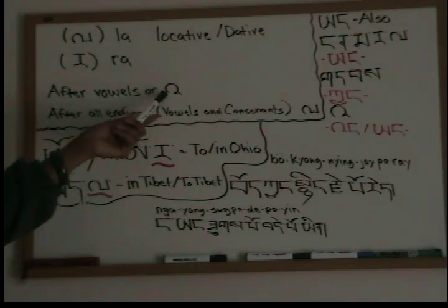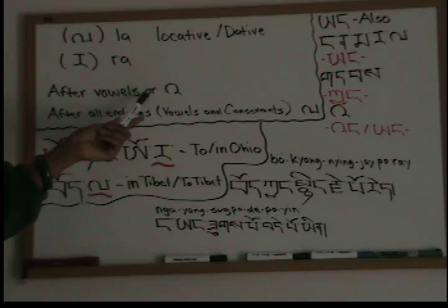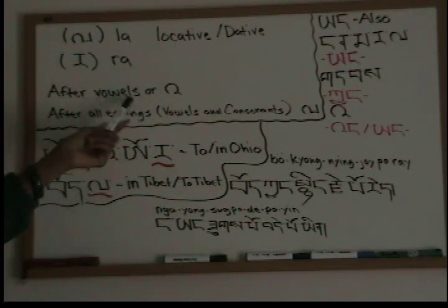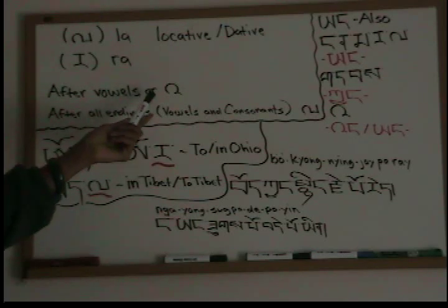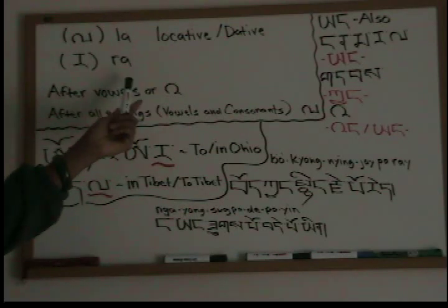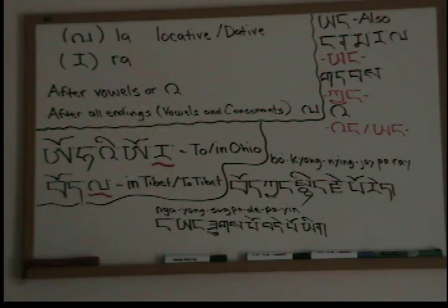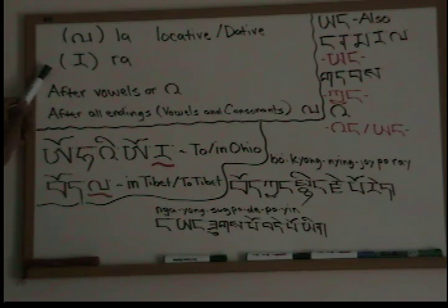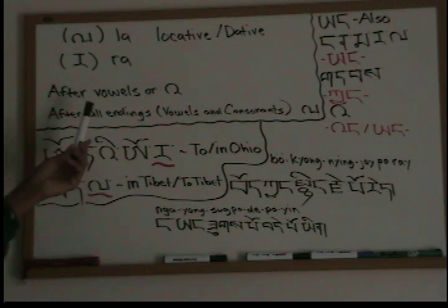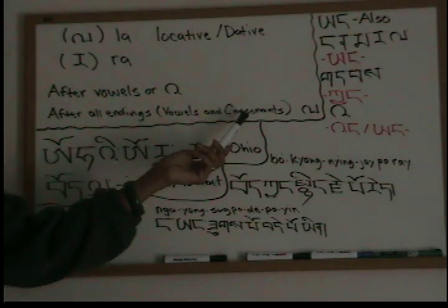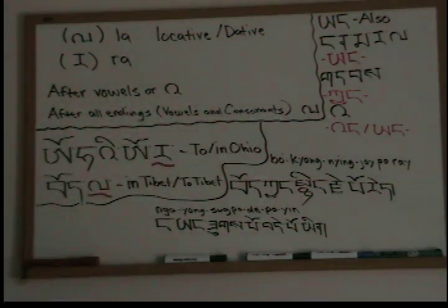The rule for that is: after vowels or this letter 'a', it will take the ra. And after all endings — both vowels and consonants — we'll take the la.